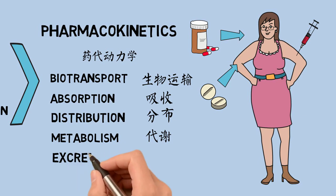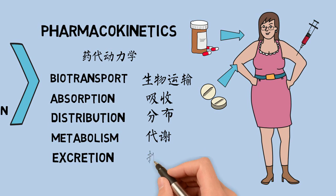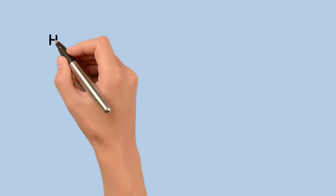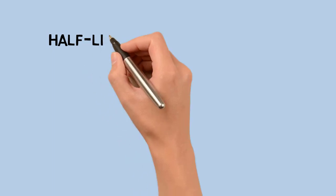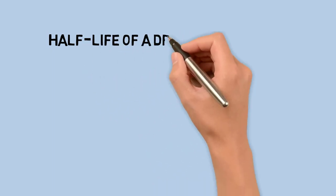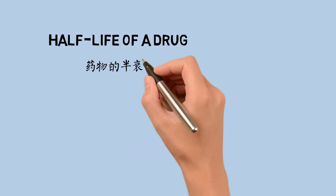Excretion: the removal of substances from the body. In rare cases, some drugs irreversibly accumulate in body tissue. When talking about excretion, we usually use the half-life of a drug.